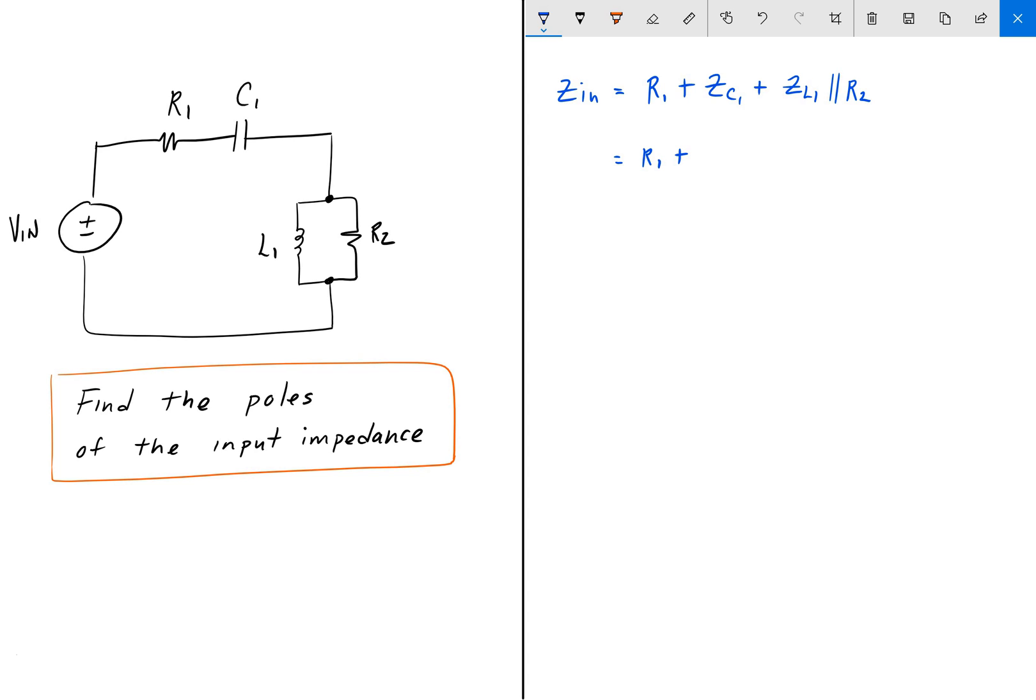And so this is equal to R1 plus the impedance of the capacitor is 1 over Sc, so that's Sc1.